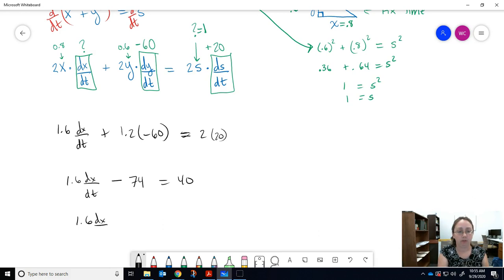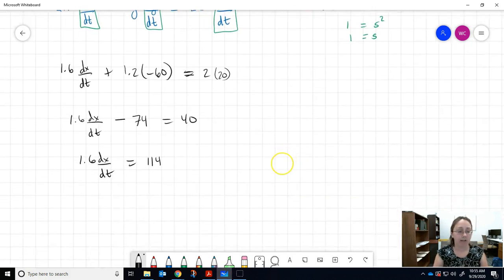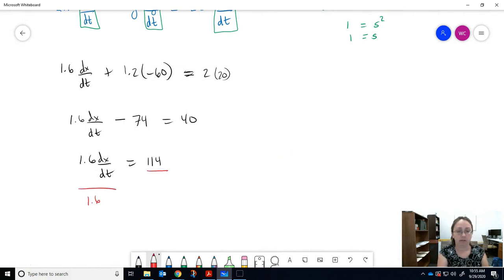So 1.6 dx/dt minus, 60 times 1.2, 60 times 12 that would be 72. I got one mistake, so this is actually supposed to be 72, my bad. So this would be, bring 72 around, we have 112. And then we divide 112 by 1.6, so 112 divided by 1.6 equals 70.